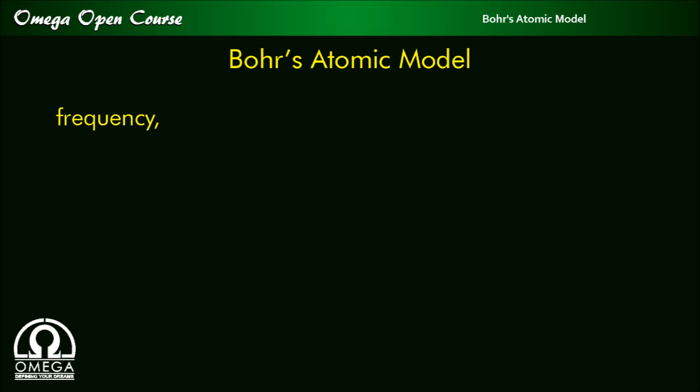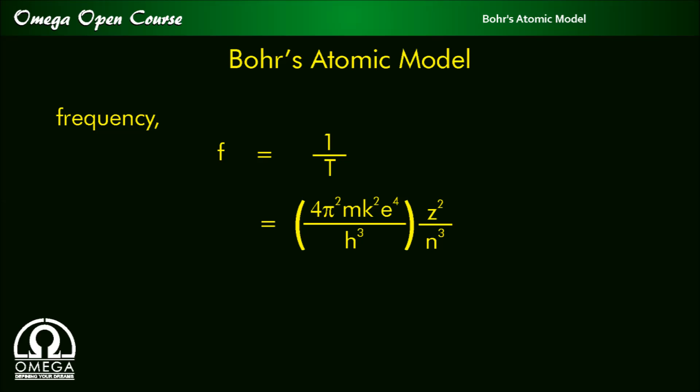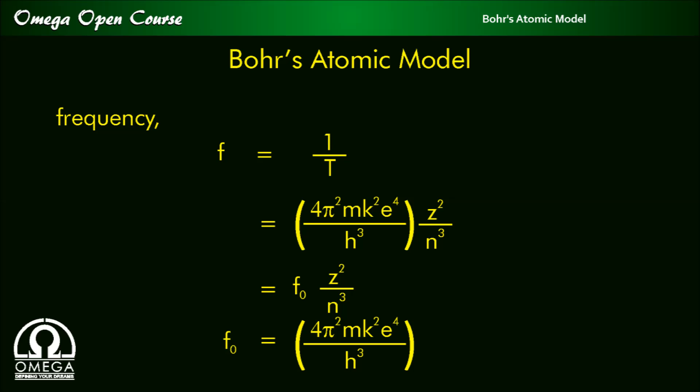Frequency is the number of revolutions made by the electron in one second. Since in t seconds one revolution is completed, in one second 1/t revolutions will be completed. Therefore, f is equal to 1/t, which equals (4π²mk²e⁴ / h³) × (z² / n³). This is clearly the inverse of the time period expression, and can also be written as f₀ × z²/n³, where the constant term 4π²mk²e⁴ / h³ has been replaced by f₀.